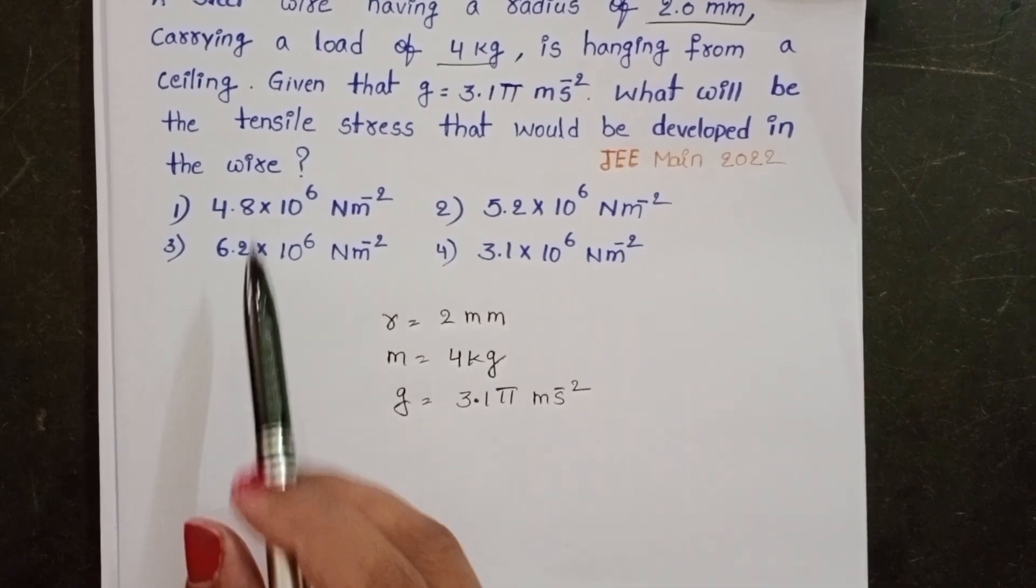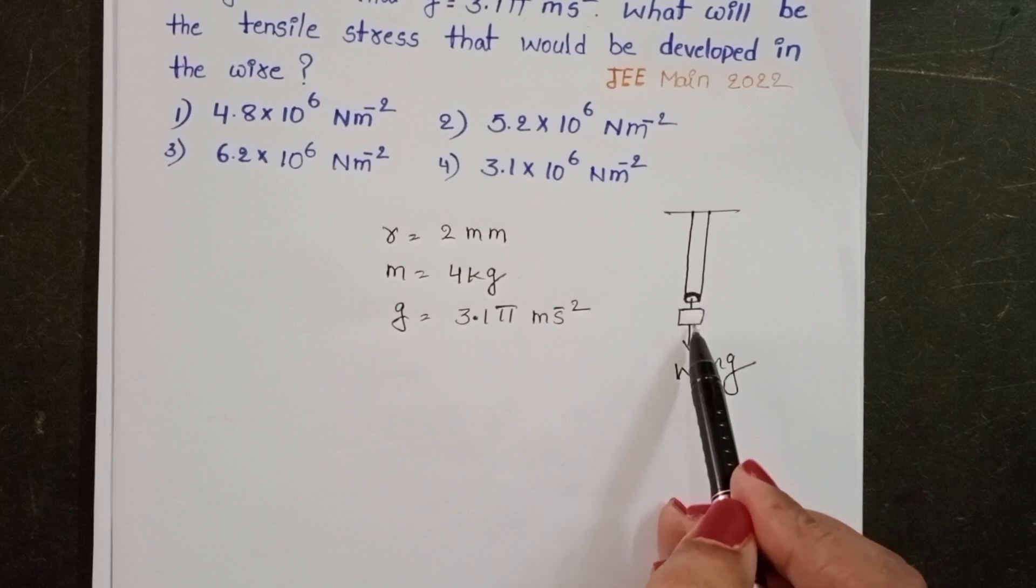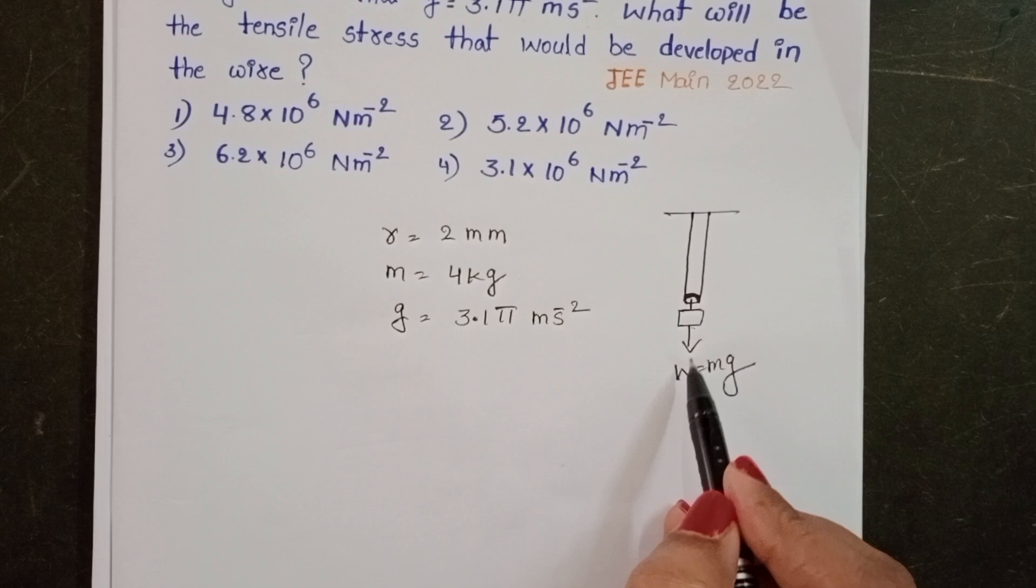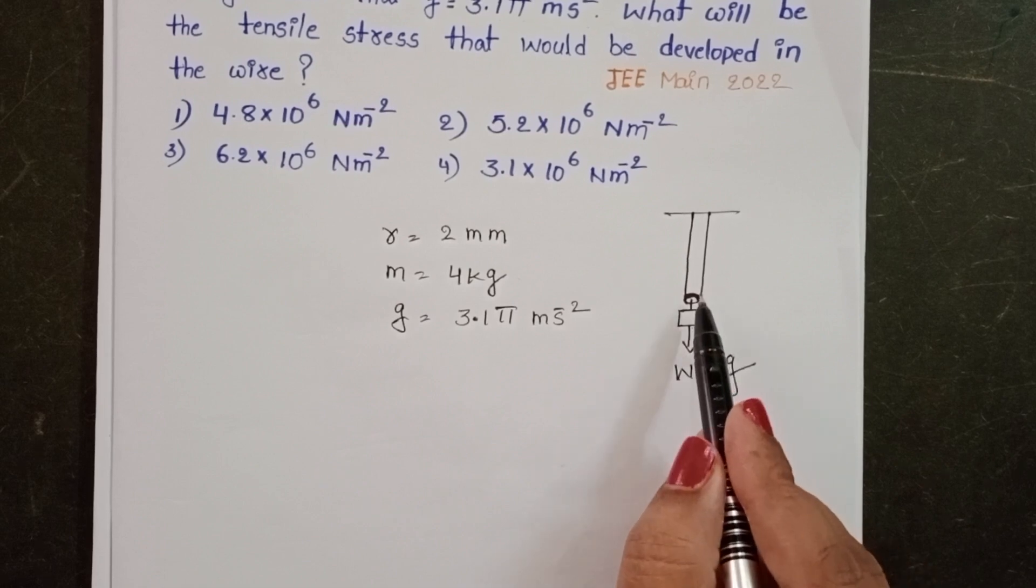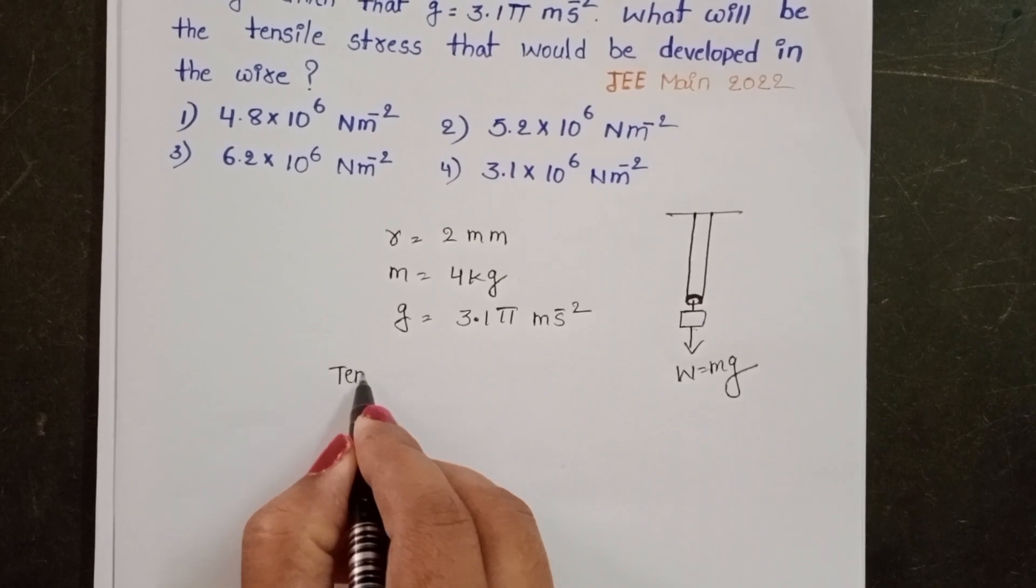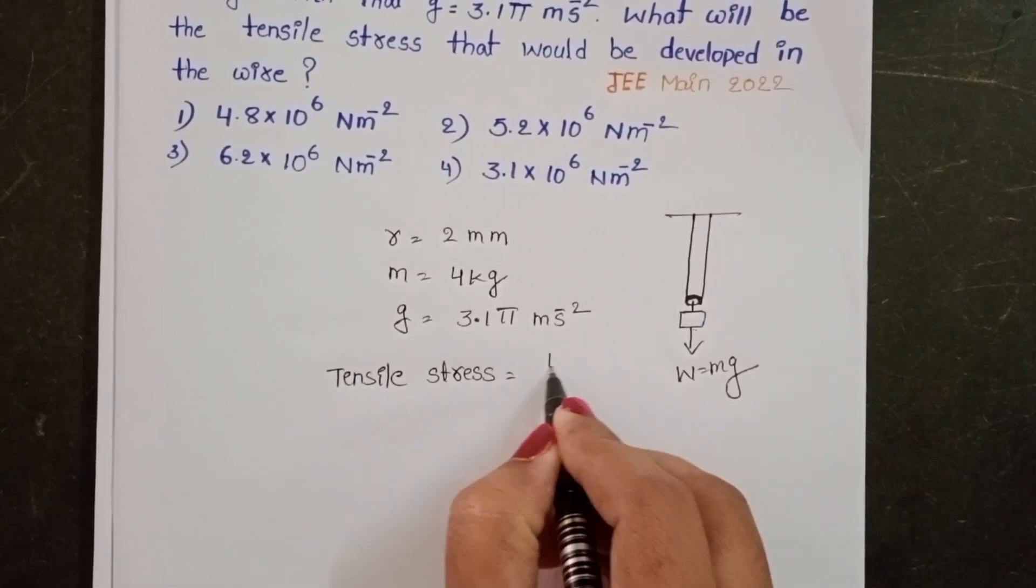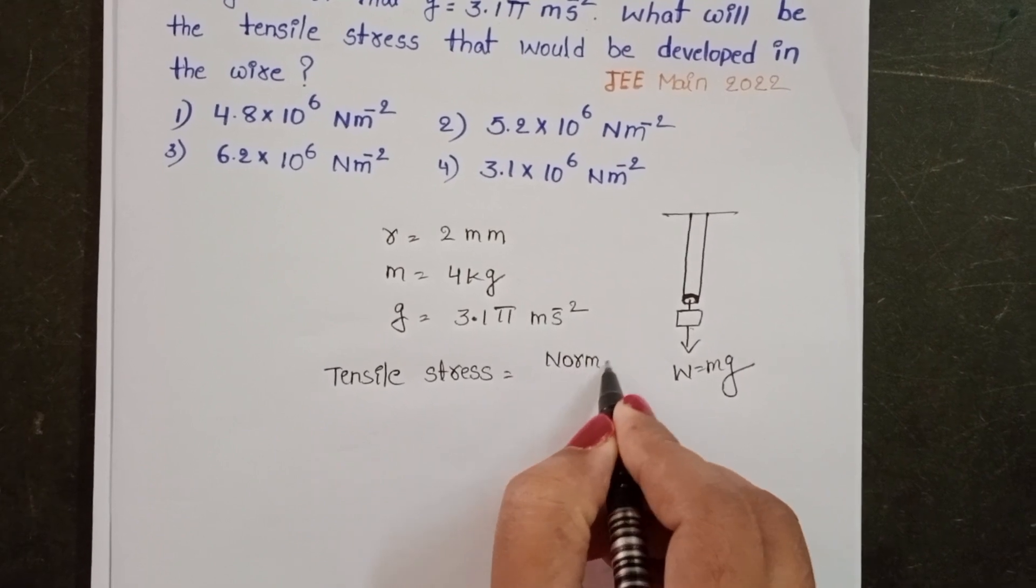We have to find out the tensile stress. The mass is attached to the steel wire. Due to this mass, it exerts a normal force on the steel wire. Tensile stress is equal to normal force by area of cross section.